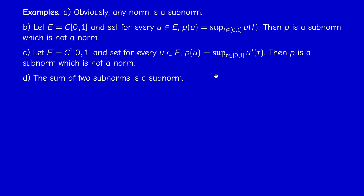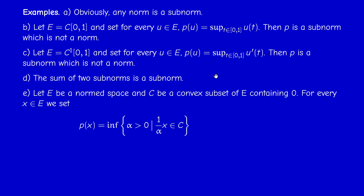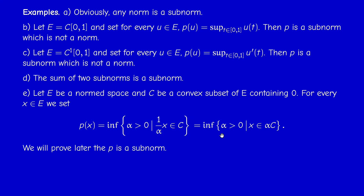This is another example of a sub-norm which is not a norm. Also note that the sum of two sub-norms is a sub-norm. A very important example of geometric nature: if E is a normed space and C is a convex subset of E containing 0, for every x in E we set P(x) = inf of all positive α such that (1/α)x belongs to C, or equivalently x belongs to αC. We will prove in section 2.1 that this is indeed a sub-norm, and give a geometric interpretation. This is called the Minkowski functional of C, or the gauge of C.